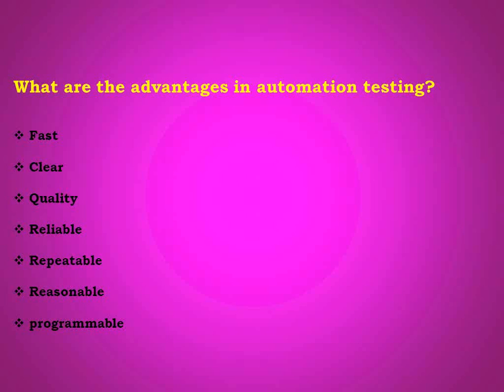The advantages are: fast, clear, quality, reliable, repeatable, reasonable, and programmable. Fast - automated tools run tests faster than human testers. Clear - every statement is easy to understand. Under quality - we can run more tests in less time with quality. Reliable - tests perform precisely the same operations each time. Repeatable - we can run the test repeatedly and check how software reacts under repeated execution of the same operations.